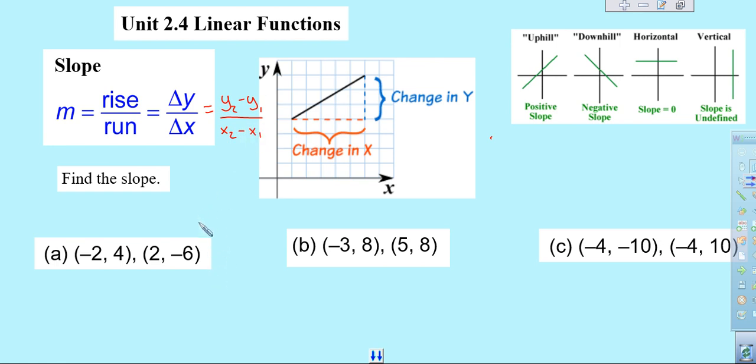So what that means is we really need to identify which one's our first one and which one's our second one. It really doesn't matter which one's which. So if I call this one x2 and this one y2, then out of consequence, I would call that one x1 and this one y1.